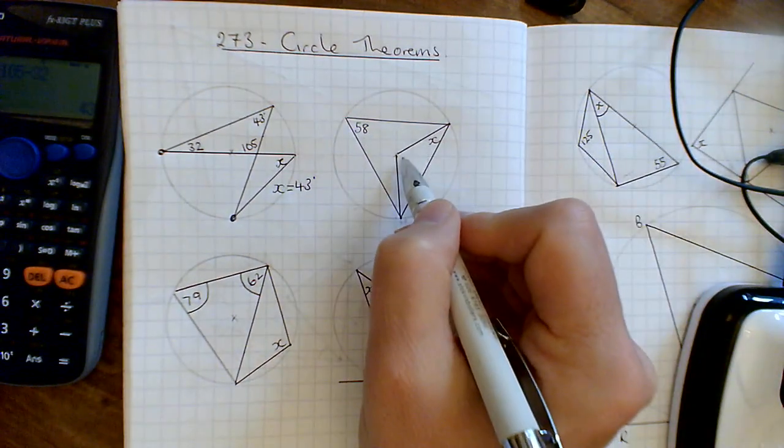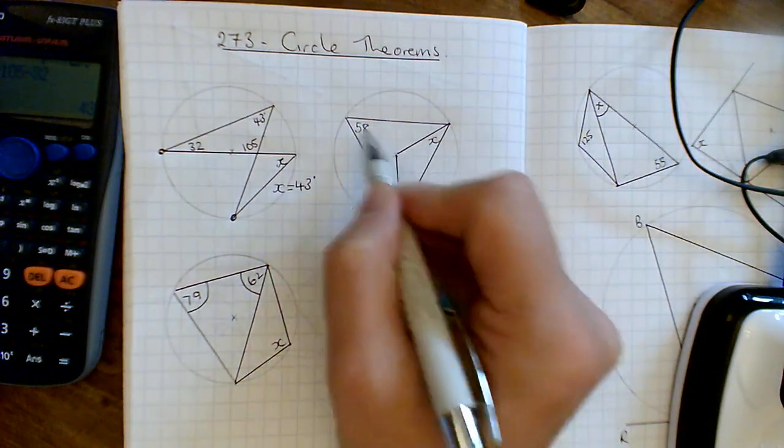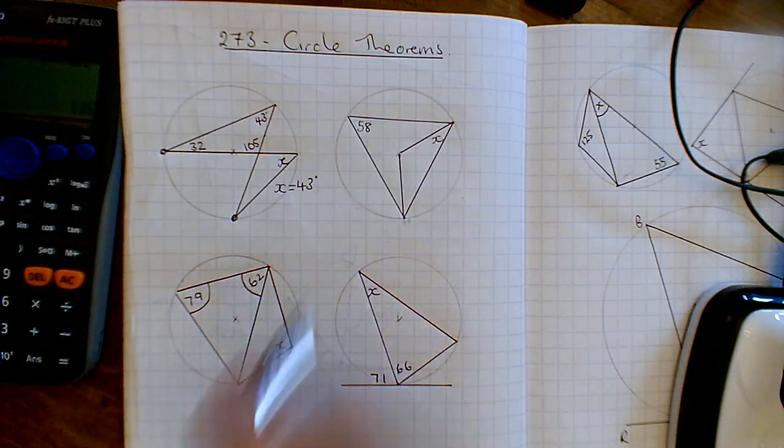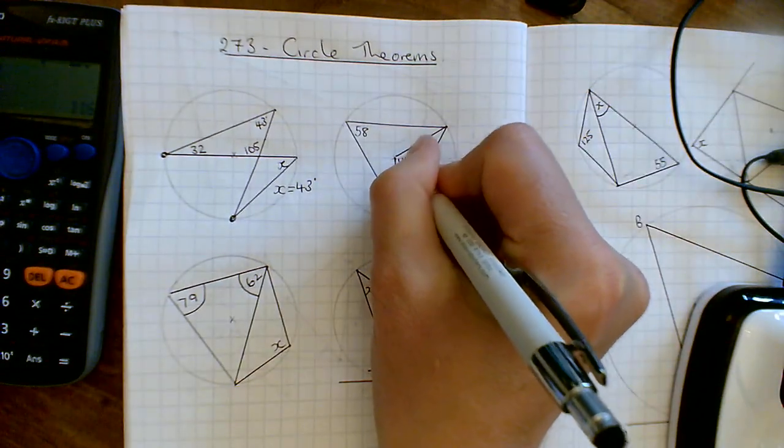On this one, we've got 58. Now what we know is the angle at the centre is double the one at the circumference. So if I just do 58 times 2, I've got 116. So I've got 116 in the centre there.